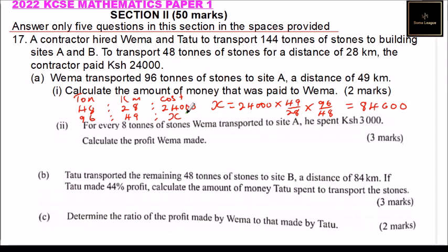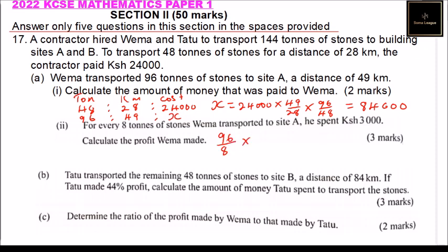That is Wemma's payment after transporting 96 tons of stones. Now for the rate of expenses provided: for every 8 tons of stones Wemma transported to site A, he spent 3,000. So 8 tons into 96 tons — we say 96 divided by 8, then multiply by the amount spent per 8 tons, giving 12 times 3,000.